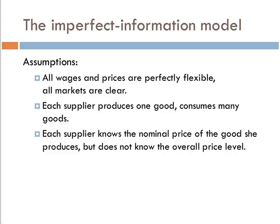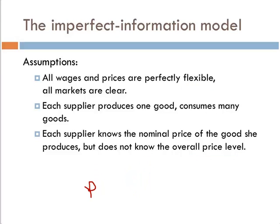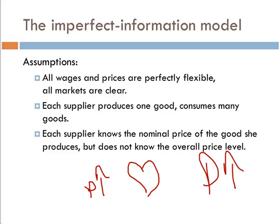We have flexible prices, but we don't know what the overall price level is. So if our price — little p for our firm — goes up, we don't know if it's because people love our goods, or if the big P price level went up. We don't know which one it is. That's the issue.